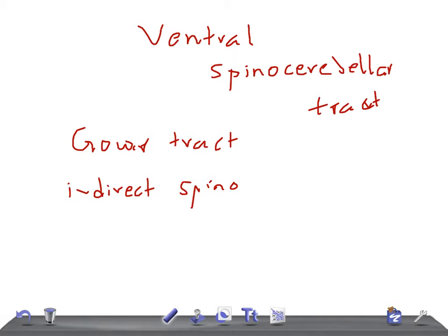The ventral spinocerebellar tract is also known as Gower's tract, or the indirect spinocerebellar tract, or the anterior spinocerebellar tract — not spinothalamic tract. Remember: anterior spinocerebellar tract.